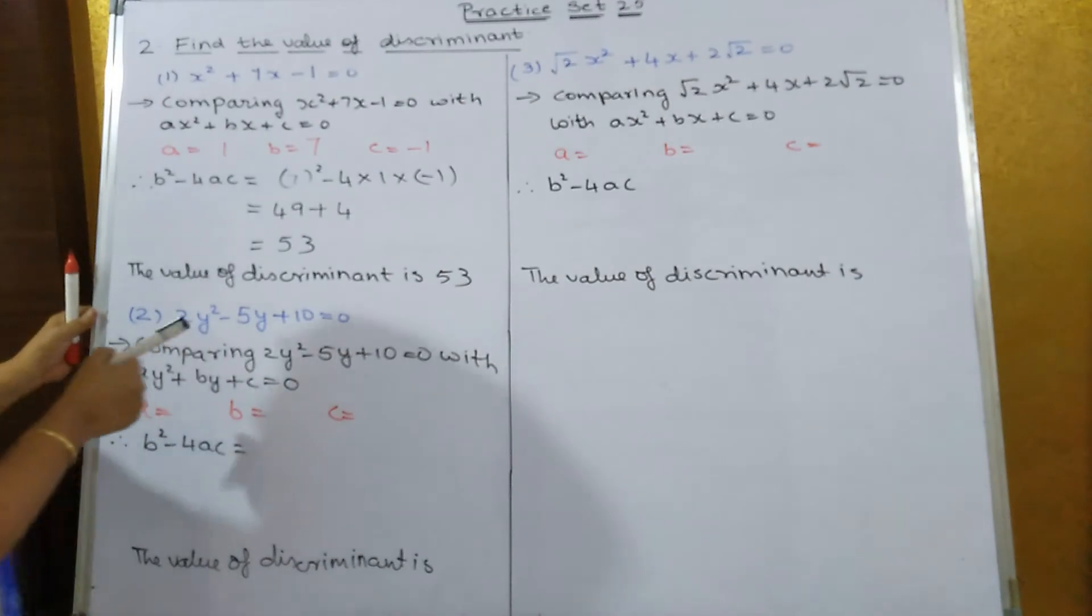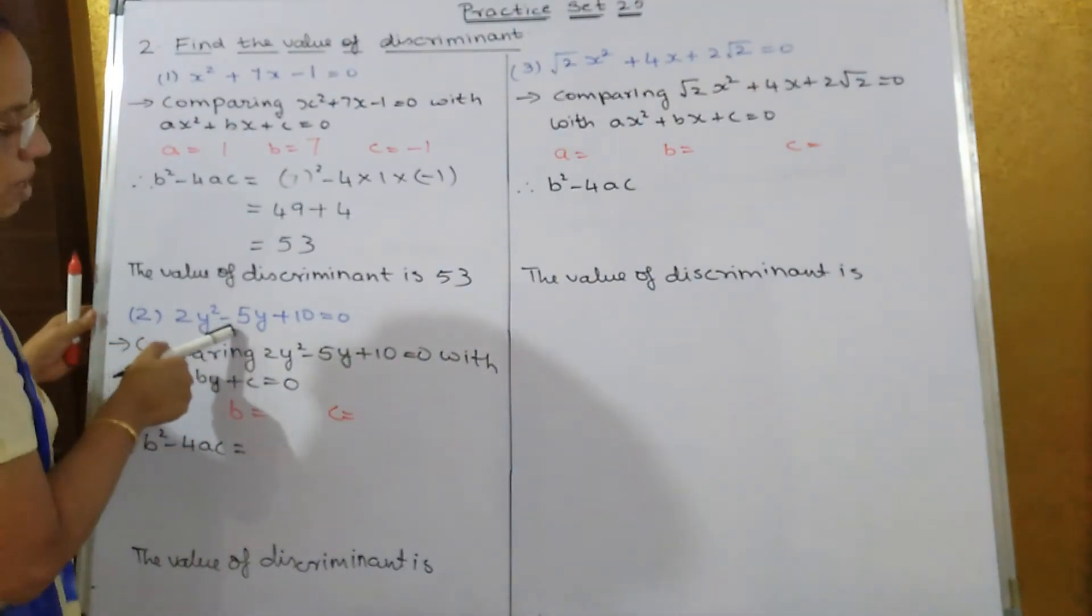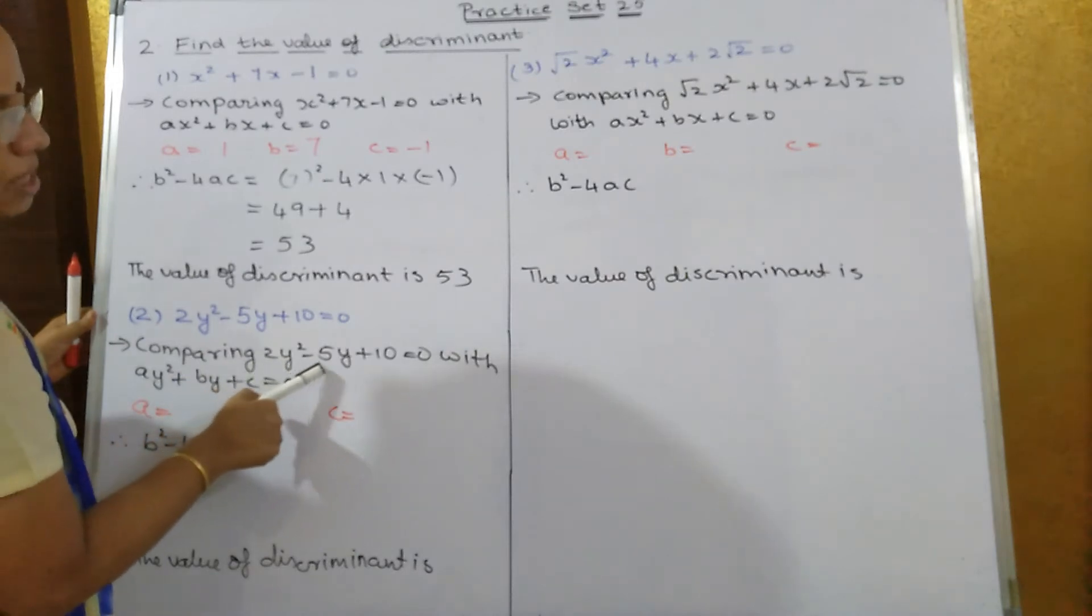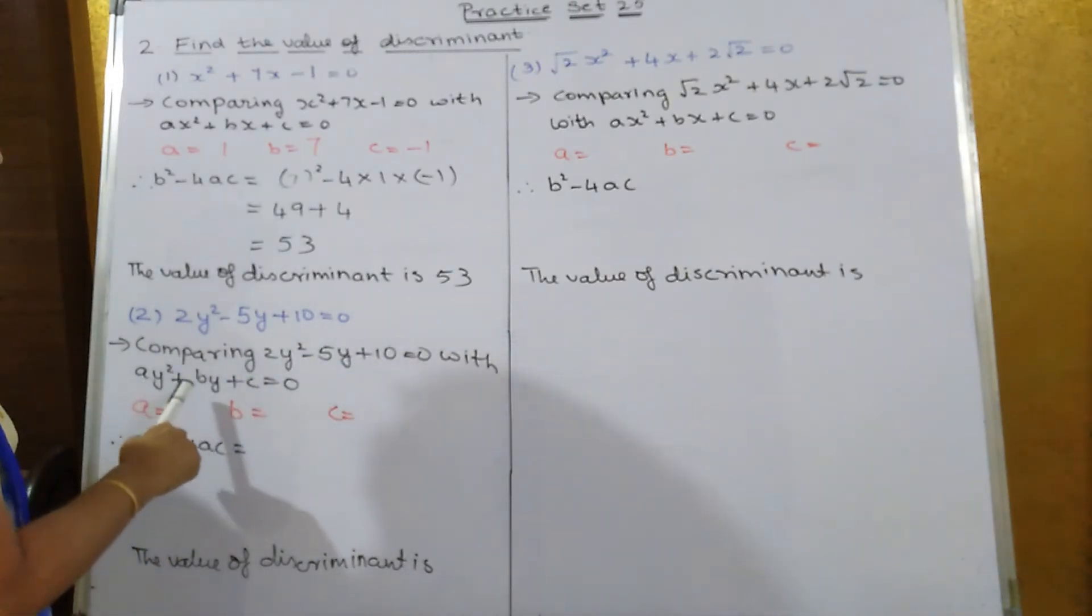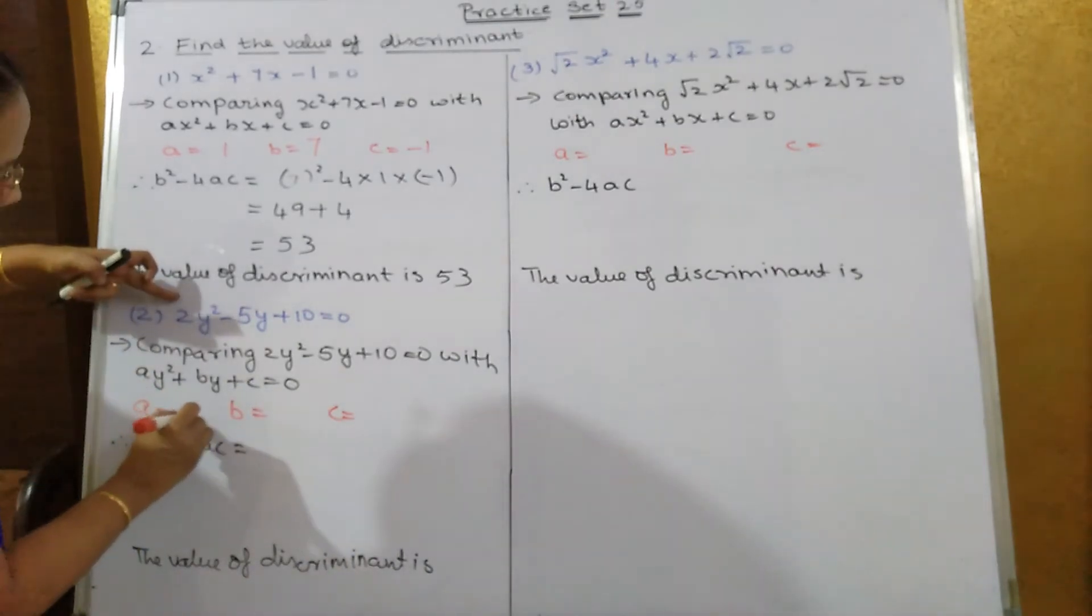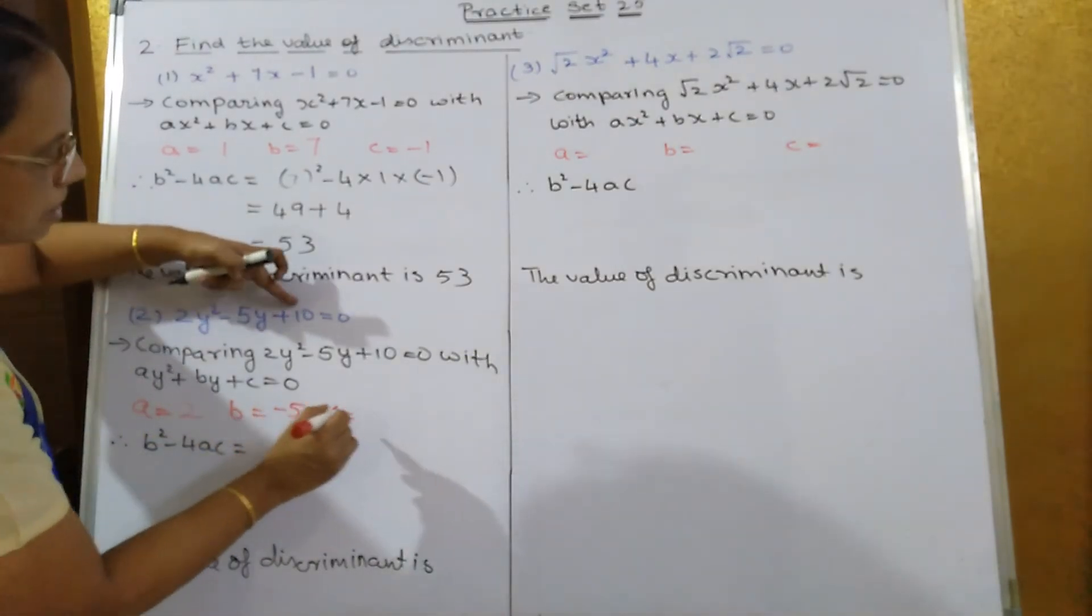Similarly, the second sum is 2y² - 5y + 10 = 0. So when you compare 2y² - 5y + 10 = 0 with ay² + by + c = 0, what is the value of a? a is equal to 2. b is equal to minus 5, and c is equal to 10.